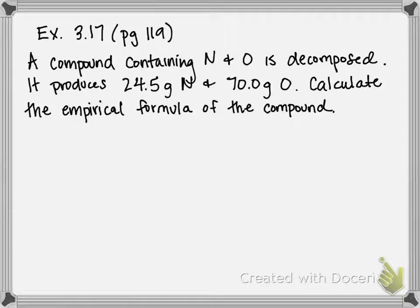This is example 3.17 on page 119 of our textbook. In this example we're going to be figuring out how to get the empirical formula for a compound given some experimental data.